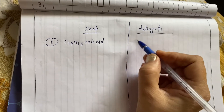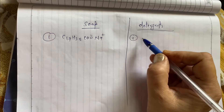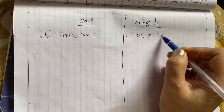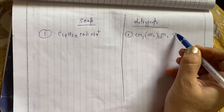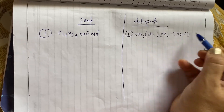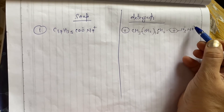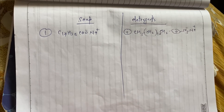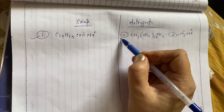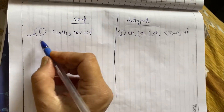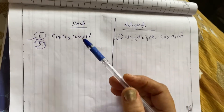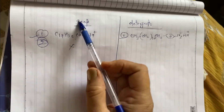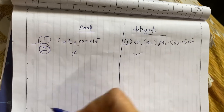Acha, ab detergent par aate hain. Iska formula aap kaise seekhoge? CH3, CH2 (taken 10 times), CH2, then a ring, uske baad SO3 aur Na — yeh minus aur yeh plus. Salts of strong acid and bases having high molecular weight. Yeh aap logon ko yaad hona chahiye. Next point: these contain oil and are not good cleaning agents — detergents are better cleaning agents.